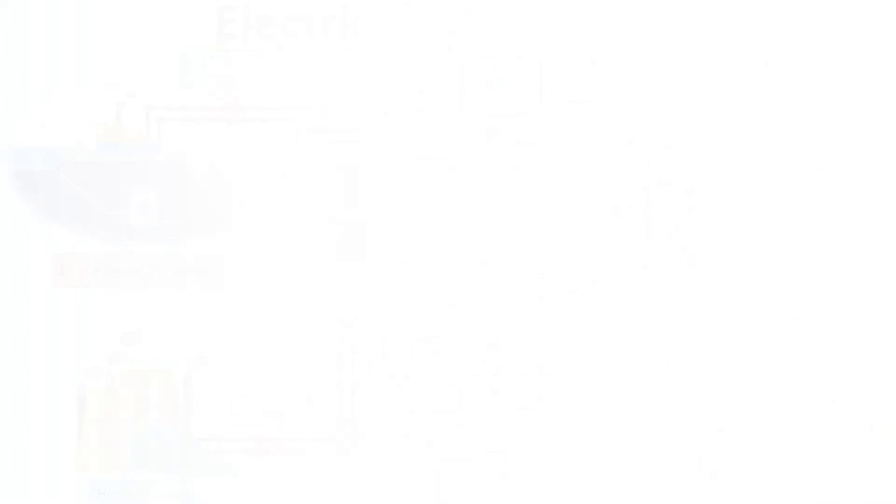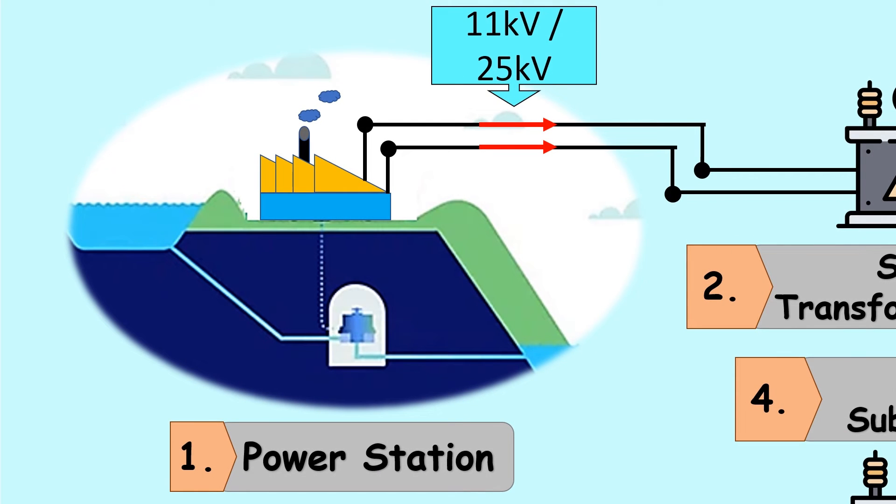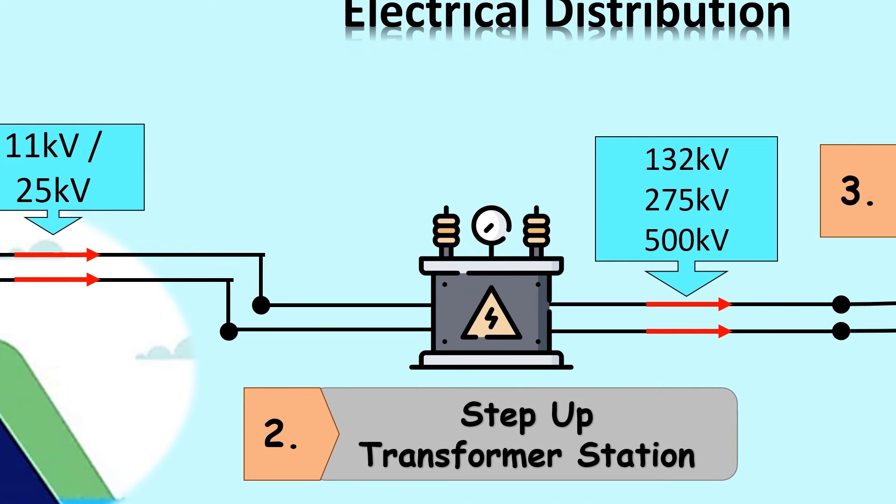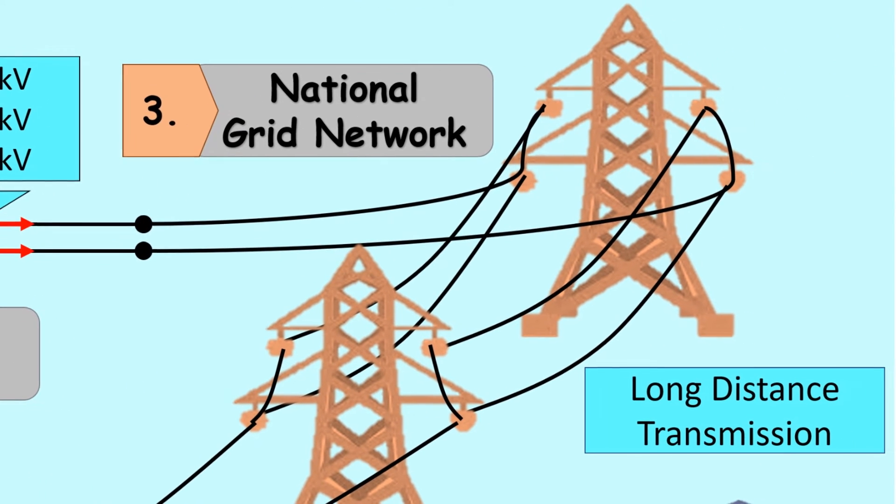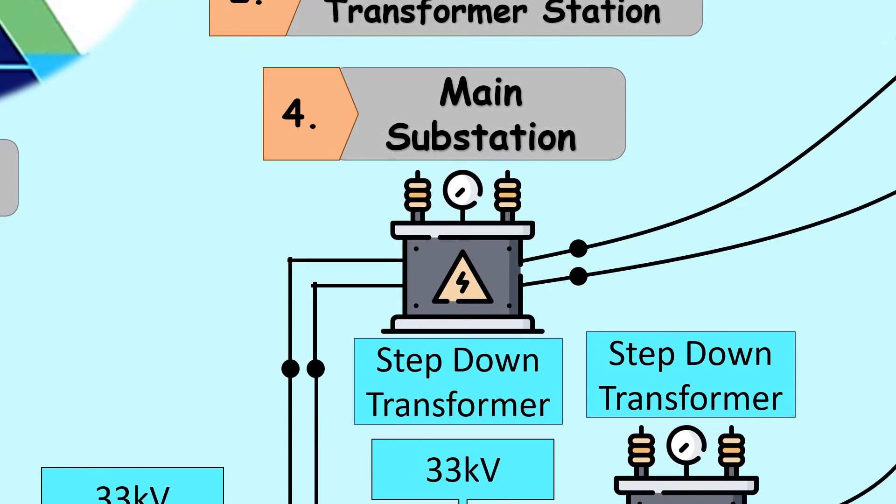Let's see again this electricity journey. The first place is the power station. The second place is the step-up transformer station. The third place is the national grid network. The fourth place is the main substation.